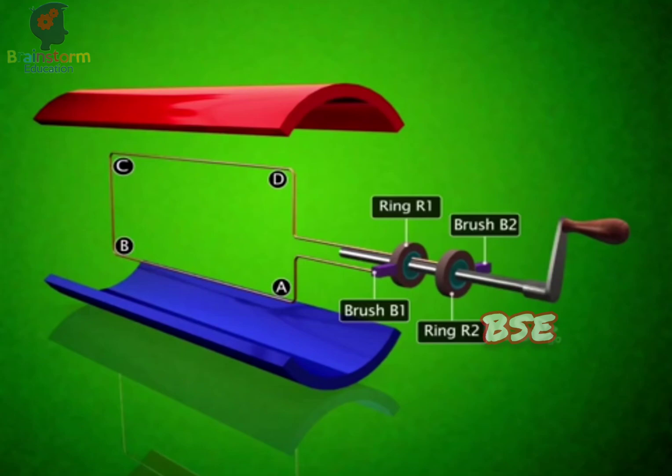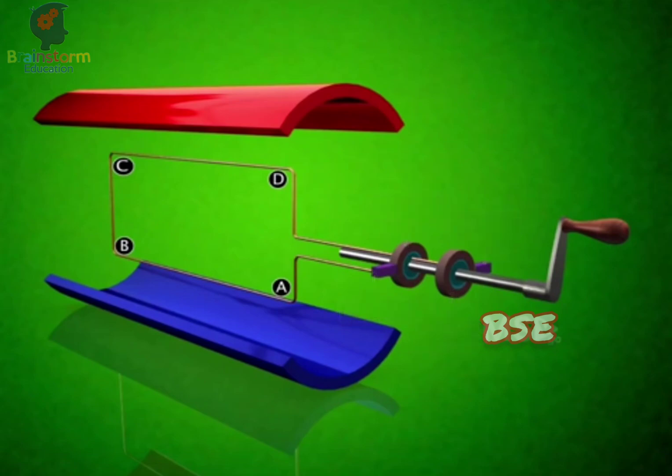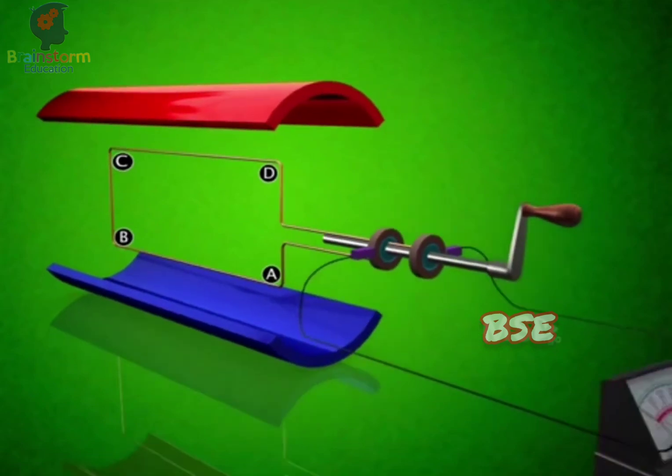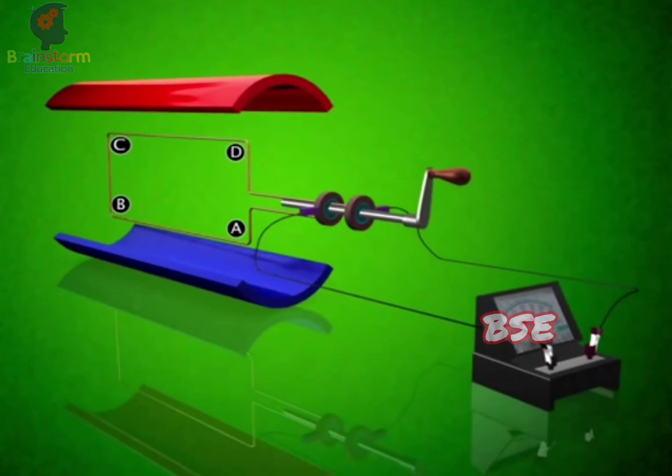Alternatively, an energy source such as diesel, flowing water, or wind can be used. The outer ends of the two brushes are connected to a galvanometer to show the flow of current in the given external circuit.